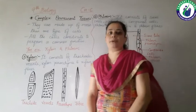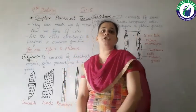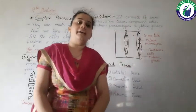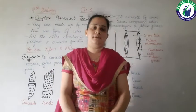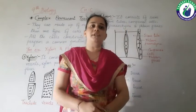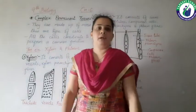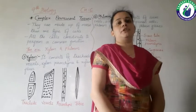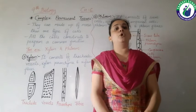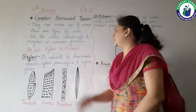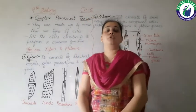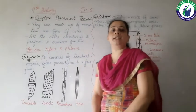Examples of complex permanent tissues are xylem and phloem. Xylem and phloem combine together and make a vascular bundle, so the vascular bundles of a plant consist of these two types of tissues. Xylem transports water from the roots to the leaves, while phloem transports food from the leaves to the whole plant.